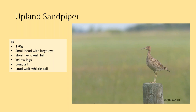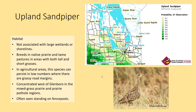The Upland Sandpiper is a shorebird not really associated with water — it is a grassland-nesting sandpiper. They have a small head with a large eye, a very skinny neck, a short yellowish bill, yellow legs, and a long tail, making them look somewhat comical. They make a very loud wolf-whistle call. They can be found in both mixed grass and tallgrass prairie areas, breeding in prairie and tame pastures with both tall and short grasses. They can persist in agricultural areas if there are grassy road margins. They're concentrated west of the Glenboro area and can often be seen standing on roadsides and fence posts.